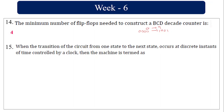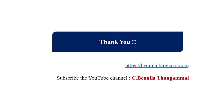When the transition of a circuit from one state to the next occurs at a discrete instant of time controlled by a clock, it is a synchronous sequential circuit. If there is no clock, it is an asynchronous sequential machine. Thank you, have a nice day — subscribe to my channel for automatic updates.